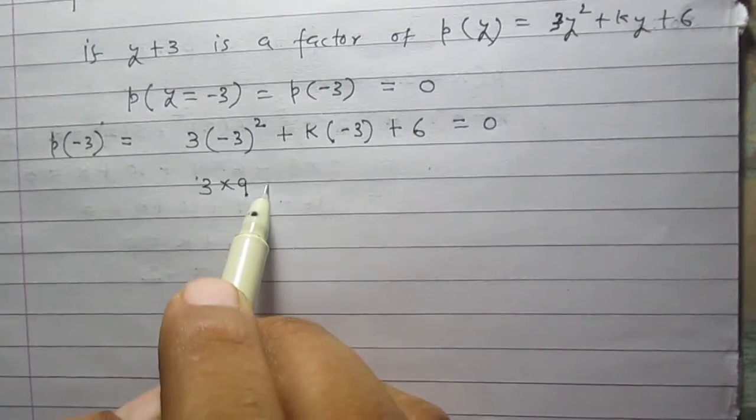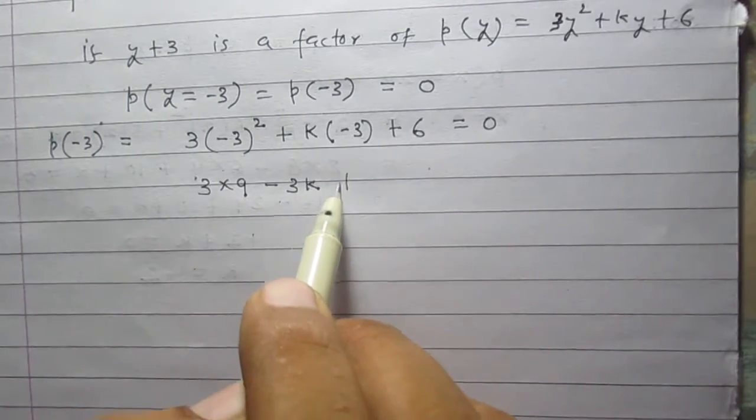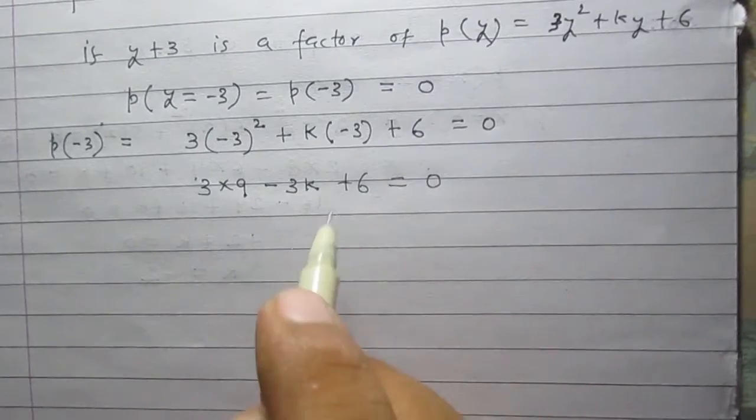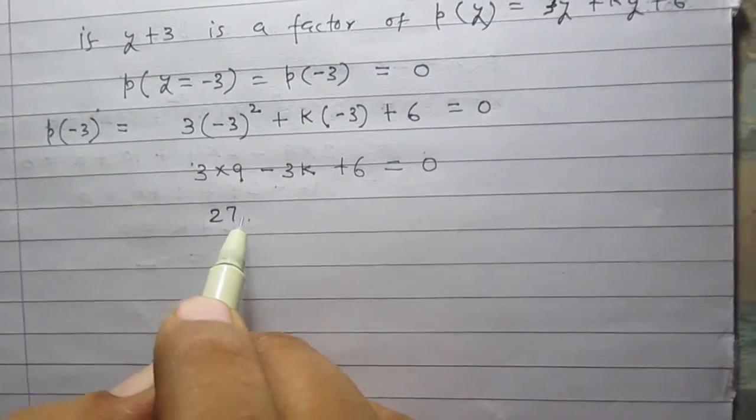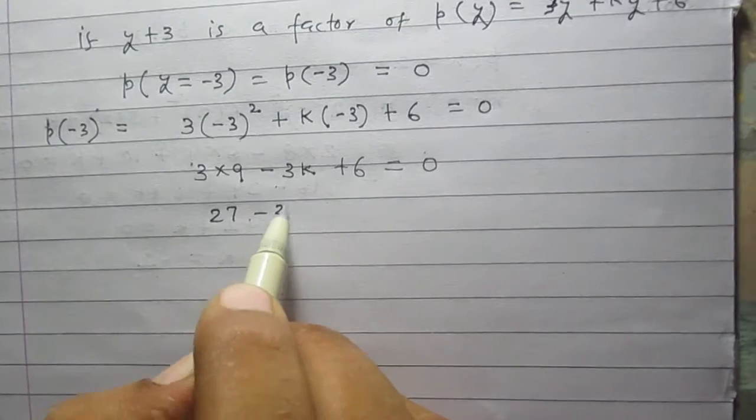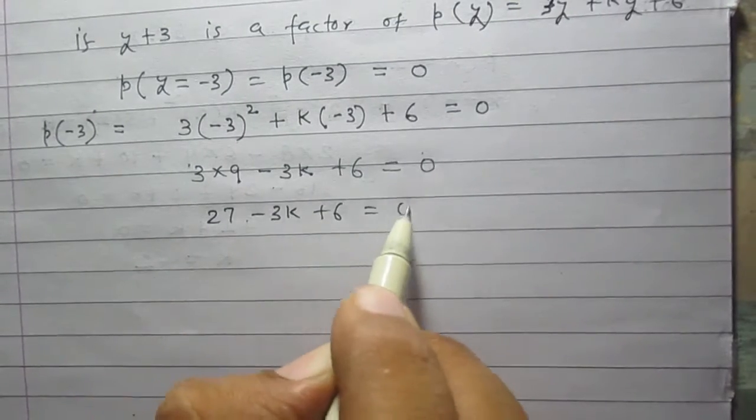So 3 multiplied by 9 and it is minus 3k, then plus 6 is equal to 0. 9 threes are 27, then minus 3k plus 6 is equal to 0.